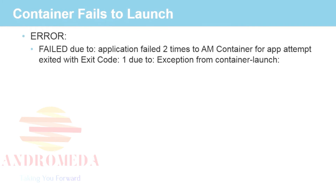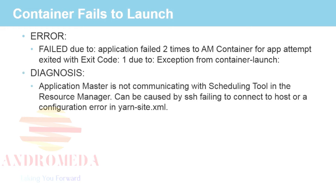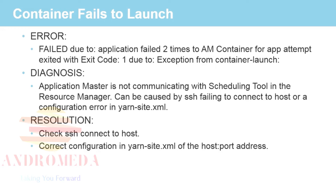Here's a common example of a more generic error: container fails to launch — the infamous exit code 1. The container failed to launch, and you got an exception from container launch. In this particular case, the application master was not communicating with the scheduling tool in the resource manager. This could be caused by simple communication problems on the network, a lack of SSH, or potentially an error in the yarn-site.xml file. Our resolution was to start by checking the SSH connection between the two hosts, and what we did find was that it was a yarn-site.xml where we had misconfigured the host port address.